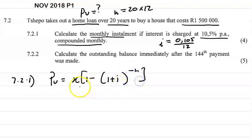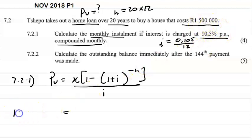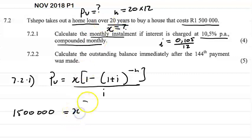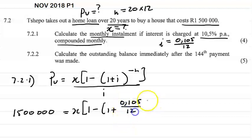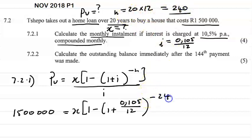So what information do we have? He's taken this loan for 1.5 million rands. We need to find the monthly installment, so x is what we're solving for. The interest rate is 10.5% per annum compounded monthly, so that's 0.105 over 12, and the number of payments is 20 times 12, which equals 240, giving us (1 + 0.105/12)^(−240).